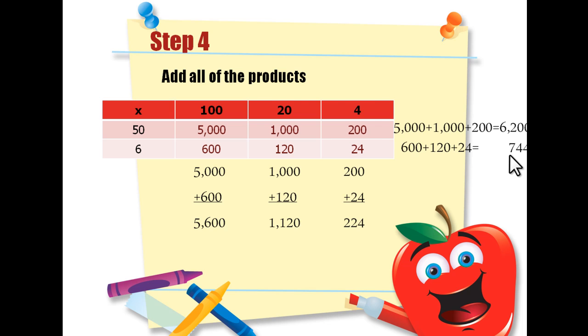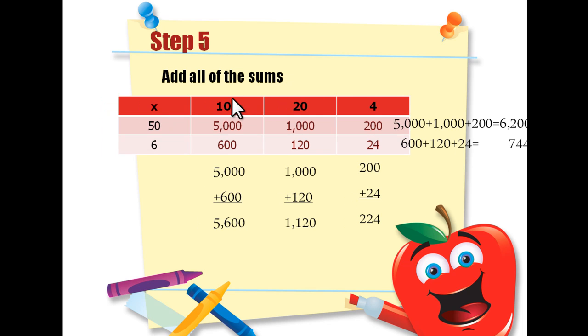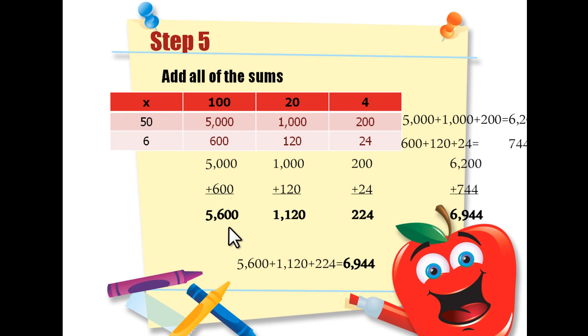Now we're not finished yet. Step 5, you add all of the sums together. So for this, we'll start at the bottom. 5,600 plus 1,120 plus 224 equals 6,944.